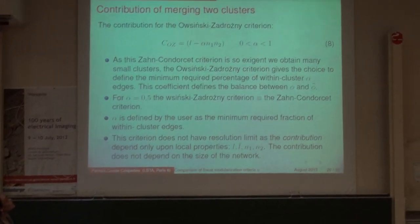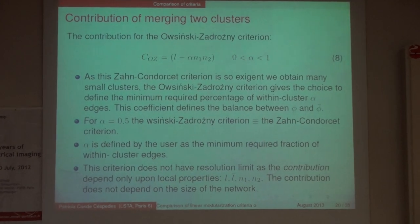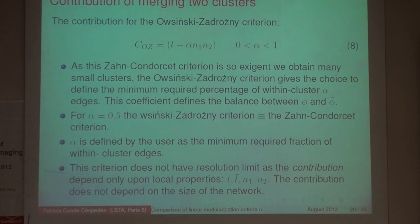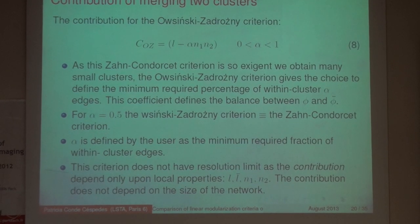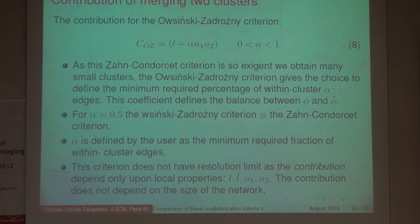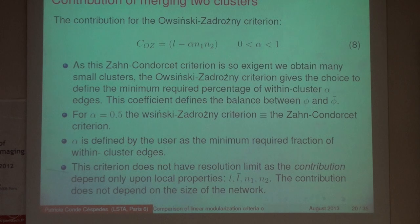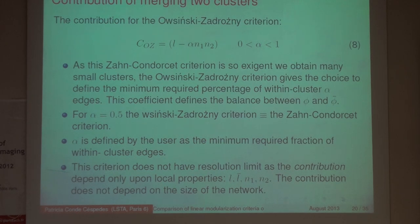Next, the convinced criterion. That is the expression of the contribution. This time we have alpha, which is the minimum required fraction of within-cluster edges that can exist. For the Condorcet criterion we have alpha equal to one half (0.5), but here we can define alpha freely. This criterion does not have a resolution limit.